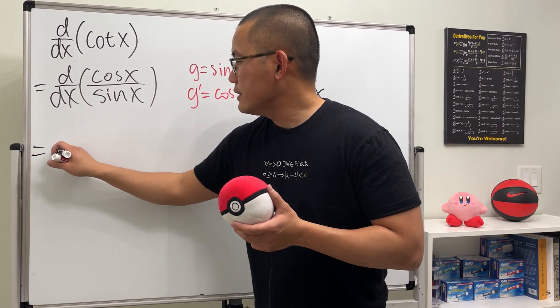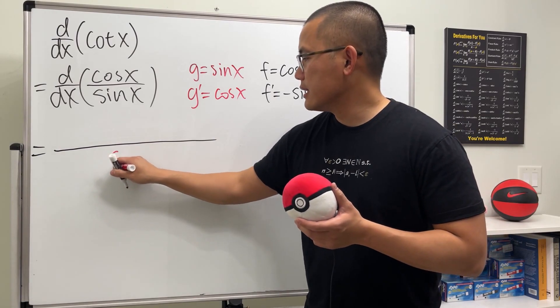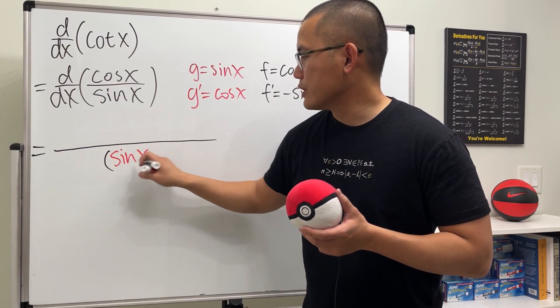Let's go ahead. First, draw the fraction bar, and then we are going to square the bottom. So I will put this down as sinx, and then we square that.